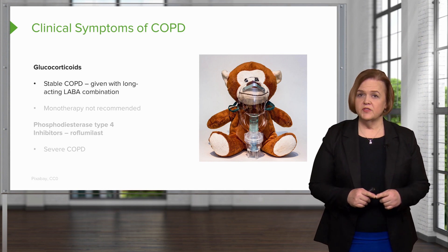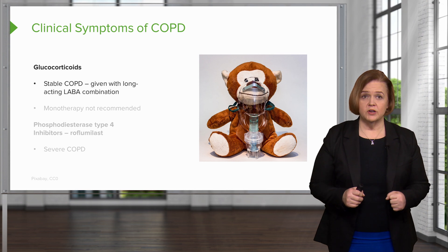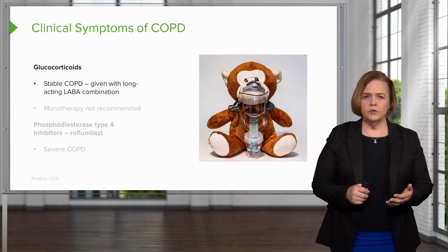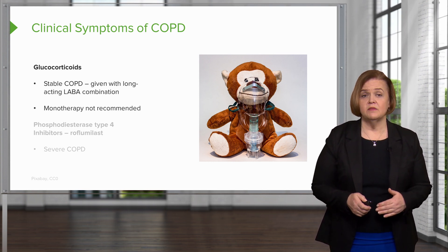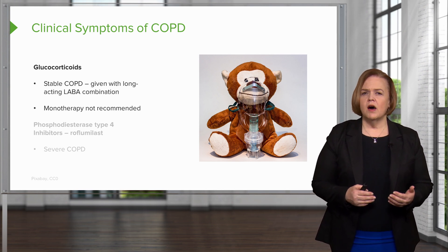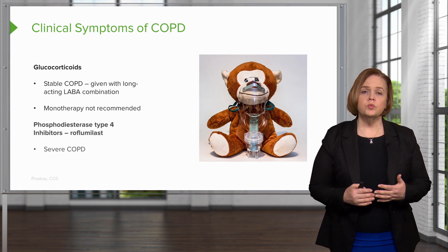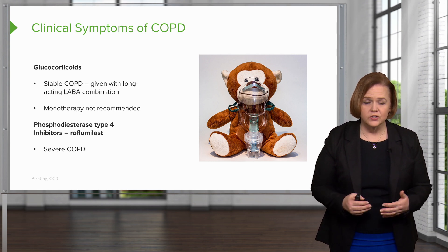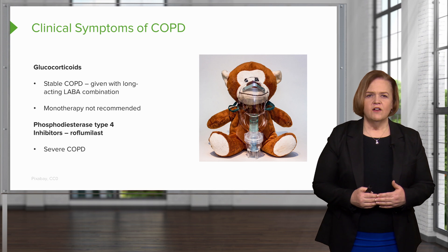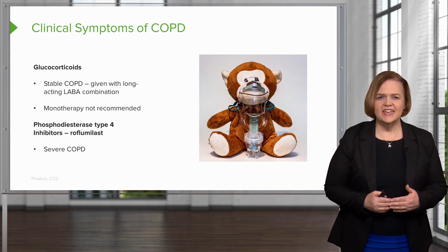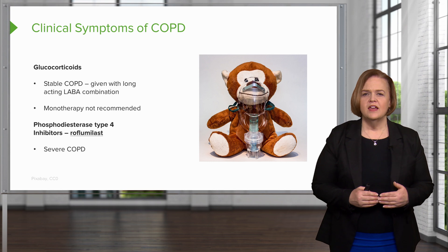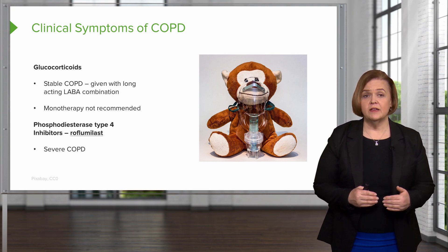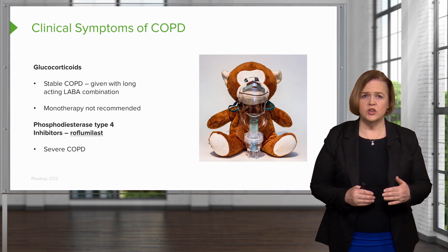Now let's look at glucocorticoids. Remember, these are never a rescue medication for anyone in respiratory distress. For stable COPD, patients will routinely be on a glucocorticoid, possibly combined with a long-acting beta-2 adrenergic agonist. We don't use these in monotherapy — mono meaning one — so you wouldn't be on just steroids by itself. Anyone with respiratory problems is also going to be on a medication that provides bronchodilation. Phosphodiesterase type 4 inhibitors are a special class used just for severe COPD.